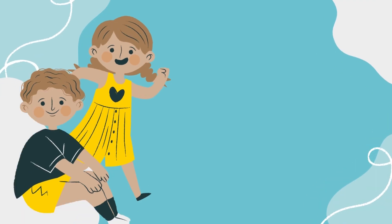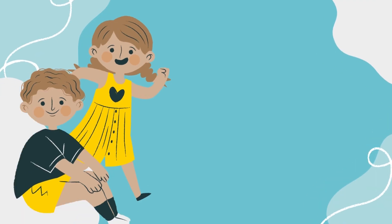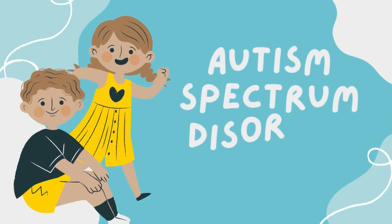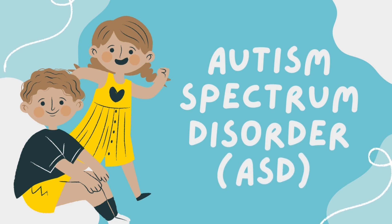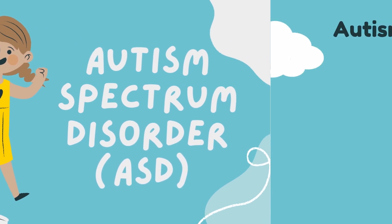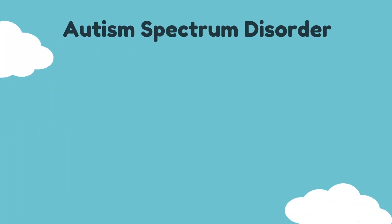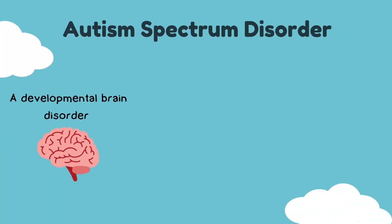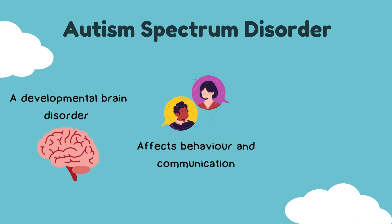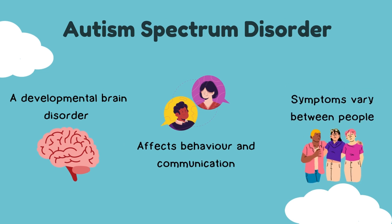There are many diseases and disorders which affect the brain, one of them being Autism Spectrum Disorder. This is a developmental disorder that affects behavior and communication. It impacts how an individual socializes and perceives interactions with others.